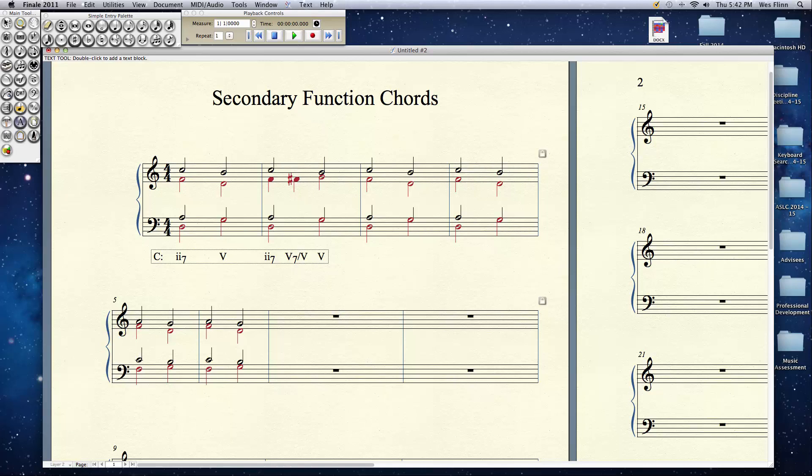We're still in the key of C, but at that moment, that chord is not in the key of C. It is a chromatic chord, it exists outside the key. So we give it this Roman numeral, V7 of 5. And it resolves to a V.